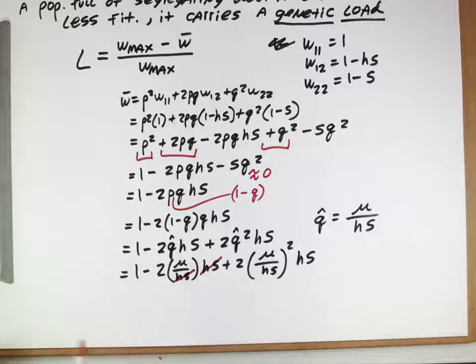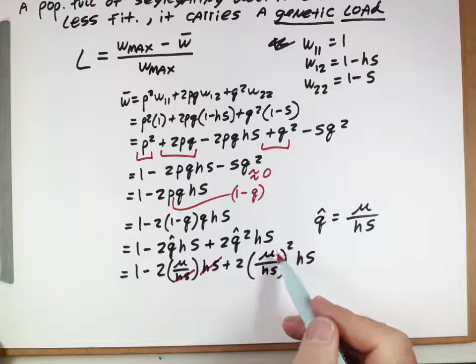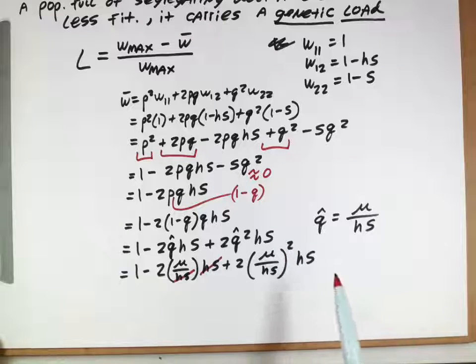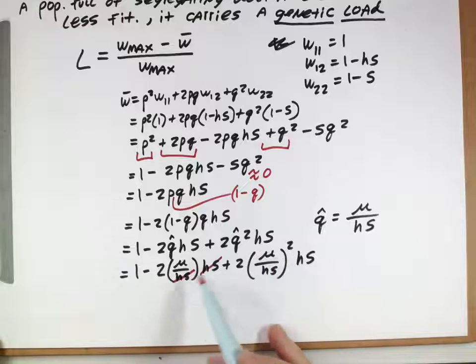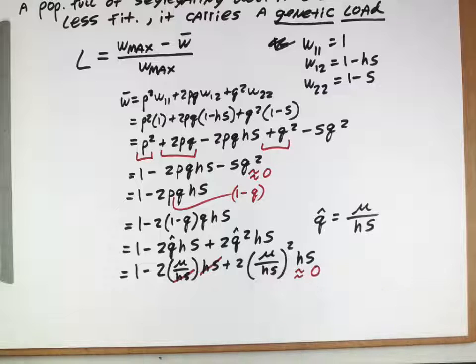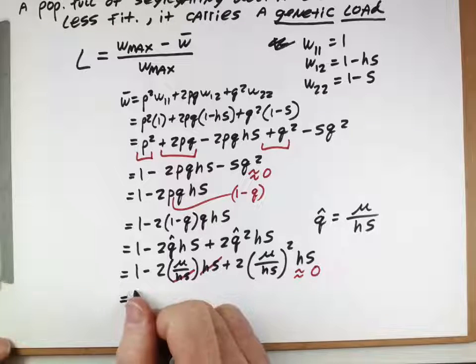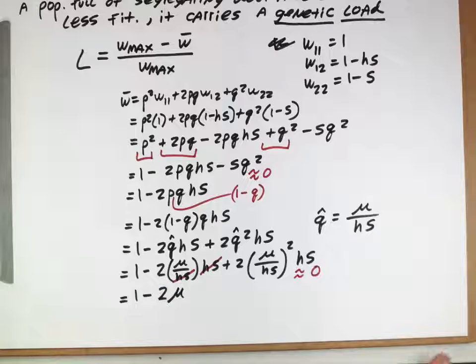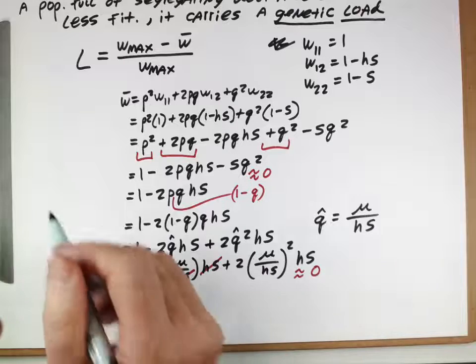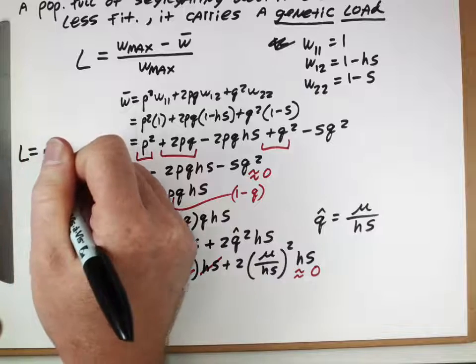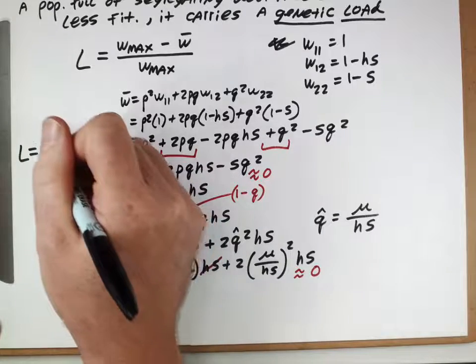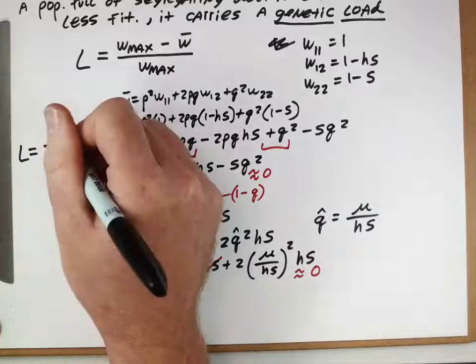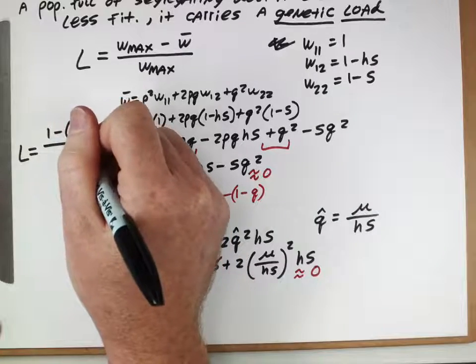That cancels with that, and then over here, if we think about this numerator, this is the mutation rate and we're squaring it. So the mutation rate squared will be tiny, so this term will be much much smaller than this term here. So we can do another one of these approximations because of the mutation rate. So that leaves us with 1 minus 2mu. So let's think about what we were doing in the first place. We were trying to get the genetic load, so that means that L is equal to w_max, the maximum fitness which was 1, right, that's what the population would have if nobody had the deleterious allele, minus the mean fitness which is now this, 1 minus 2mu, all divided by the maximum fitness.